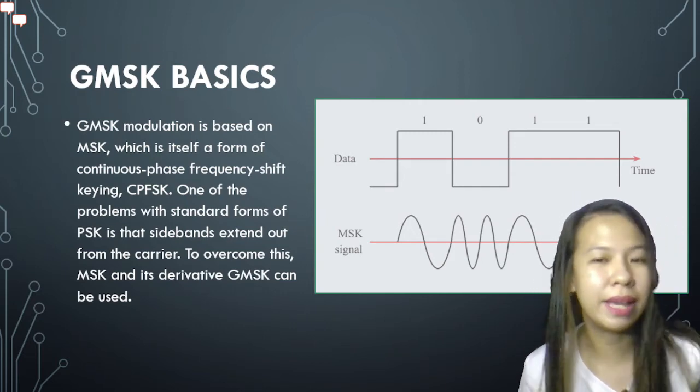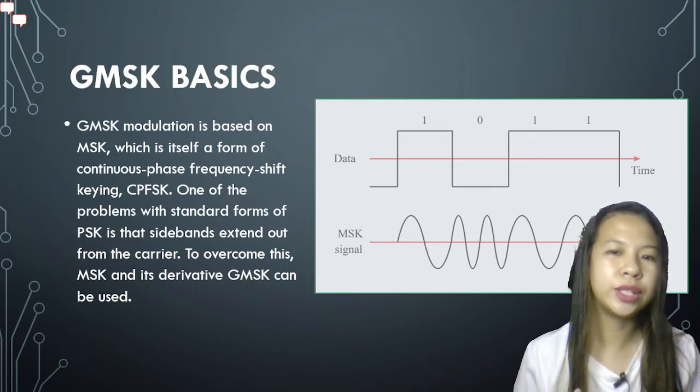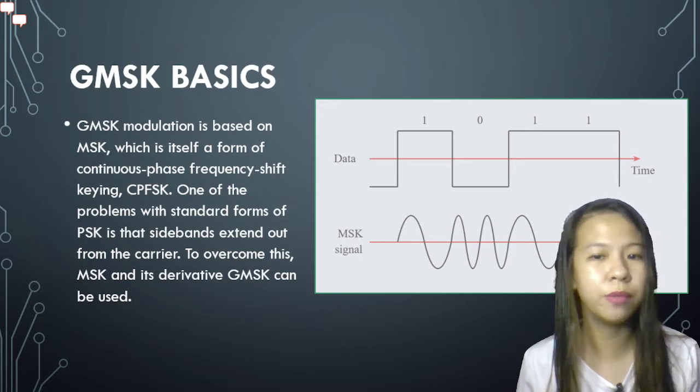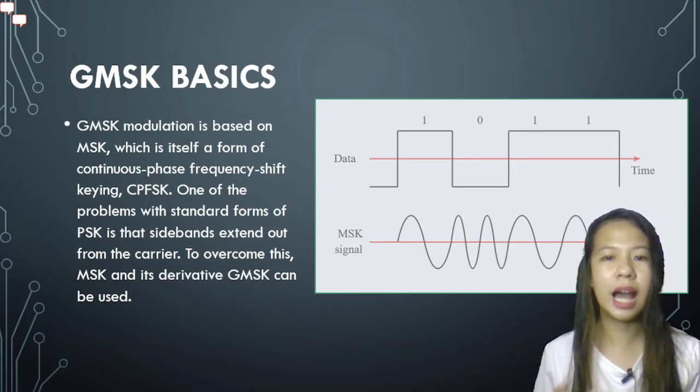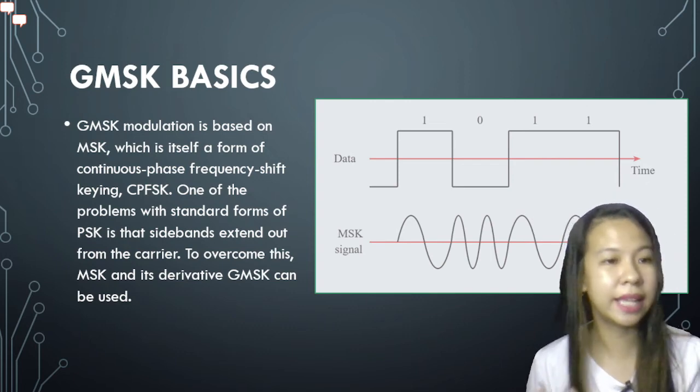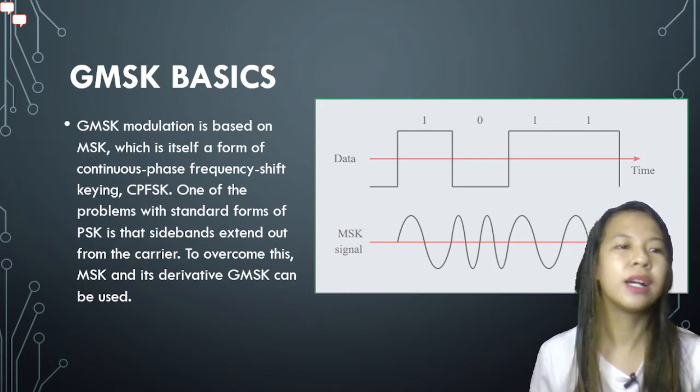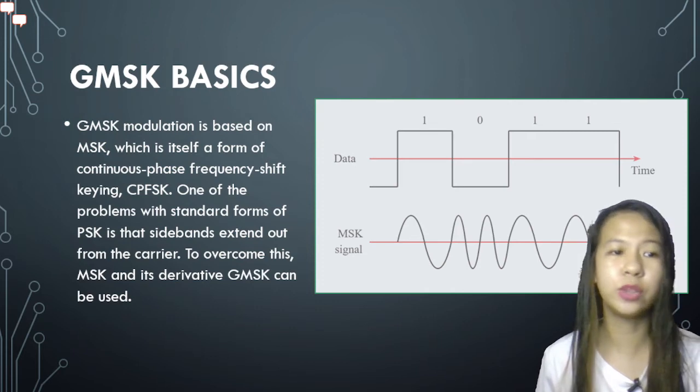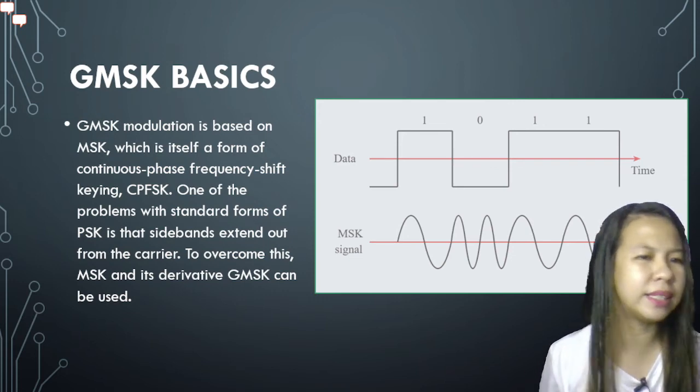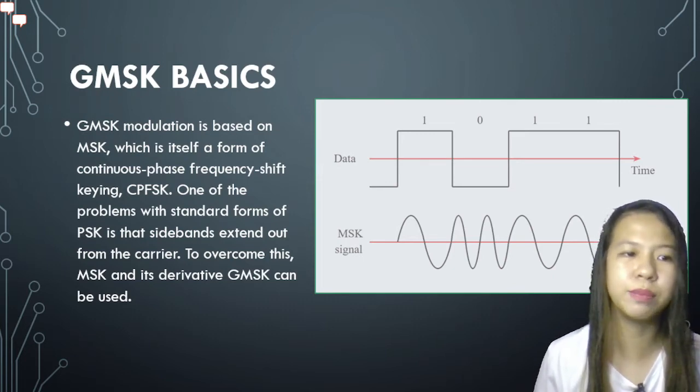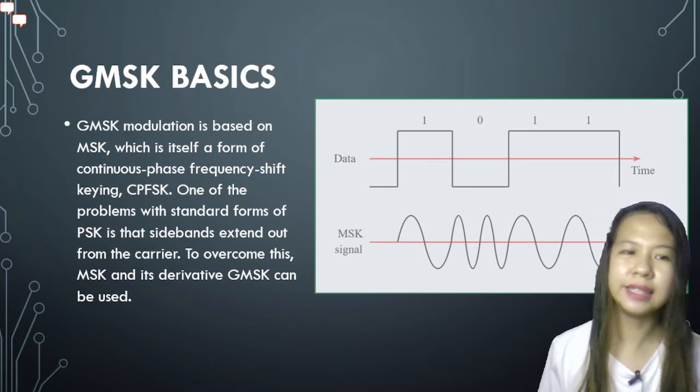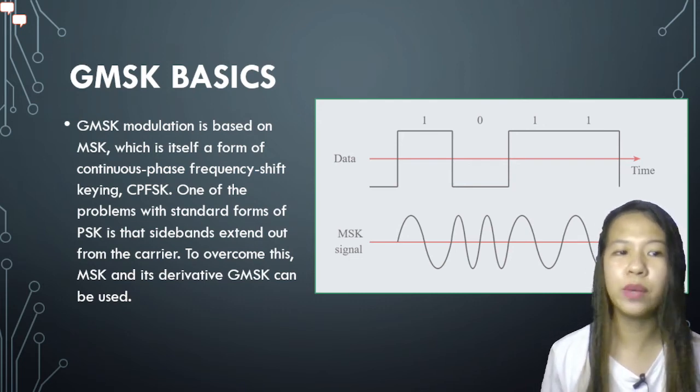So the GMSK basics. GMSK modulation is based on MSK, which itself is a form of continuous phase frequency shift keying CPFSK. One of the problems with the standard form of PSK is that the sidebands extend out from the carrier. To overcome this, MSK and its derivative GMSK can be used. MSK and also GMSK modulation are what is known as continuous phase schemes. Here, there are no phase discontinuities because the frequency changes occur at the carrier zero crossing points. This arises as a result of the unique factor of MSK that the frequency difference between the logical one and logical zero state is always equal to half of the data rate. This can be expressed in terms of the modulation index and it is always equal to 0.5.